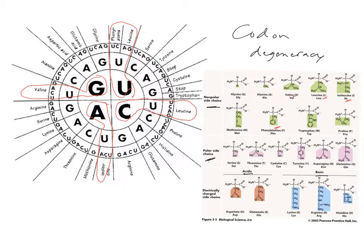If we have the codon UUG, we can change the first nucleotide to get CUG, which is still leucine — another silent mutation. But even if we changed UUG to GUG, that's valine, which is still a non-polar amino acid. So it's less likely to have a catastrophic effect on folding and function. This would be a conservative mutation, where the substitution doesn't have a major effect.